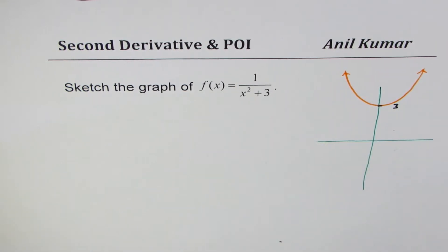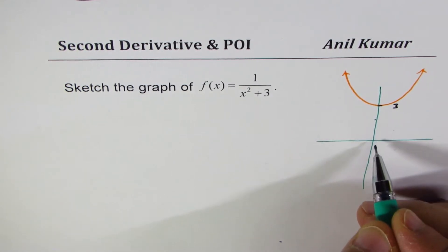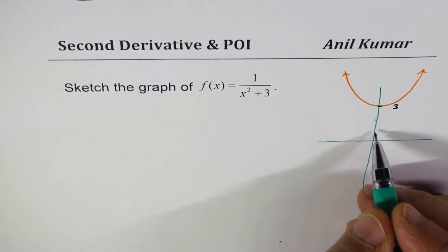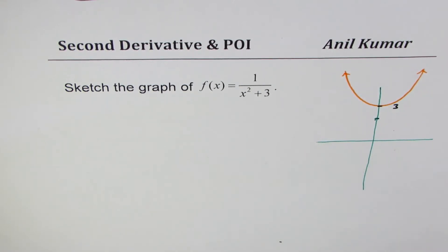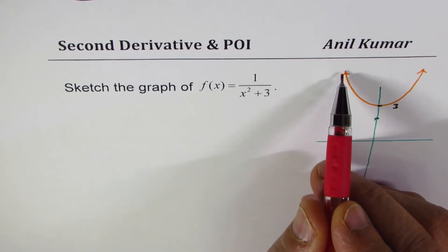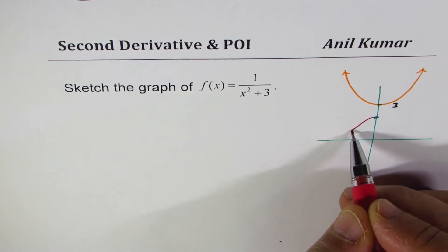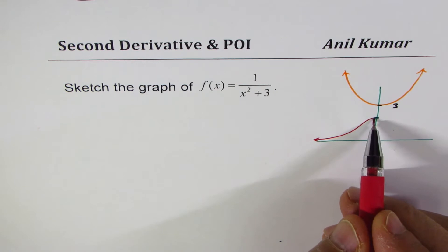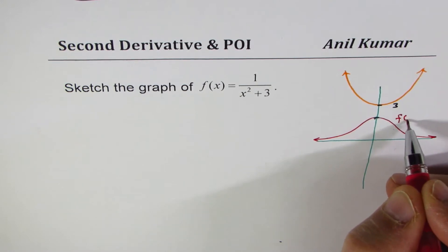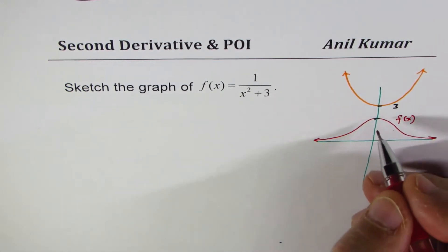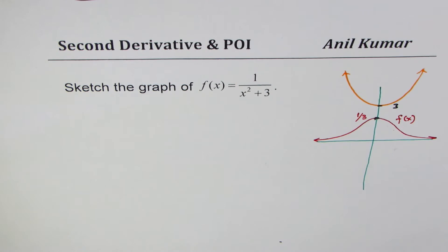To sketch the reciprocal of this parabola, I take the reciprocal of 3 which is one-third. Let me increase the scale — assume this is one-third. As the graph moves towards infinity, the reciprocal moves towards 0.